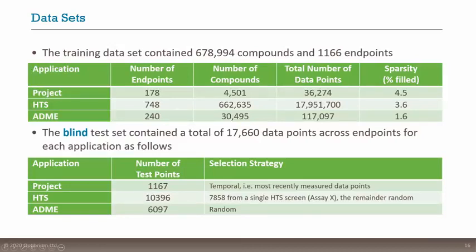The way we tested each of the three questions was using a fully blind test set: Scott held this data back while we built the models on the training data, then provided the test set after. For the project set, Scott held back the most recent measured data points, which we then predicted from the earlier data — realistic for how a project might progress through time.